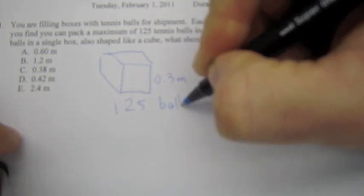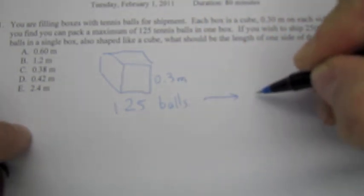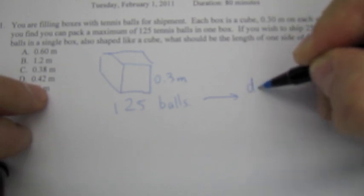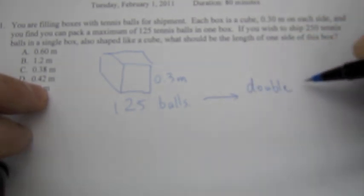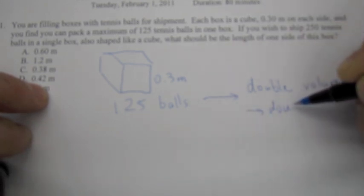Okay, so if you have one box and it is 0.3 meters on all of its sides, and fits 125 balls, then to double that number, I would say double the volume would be double the capacity, right?